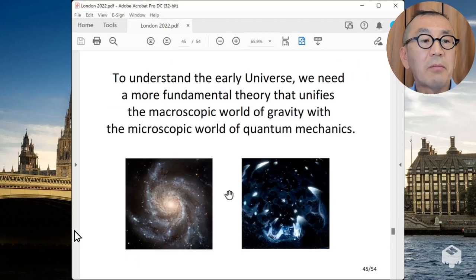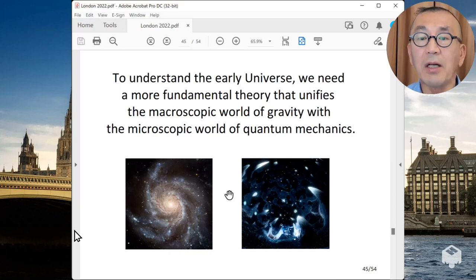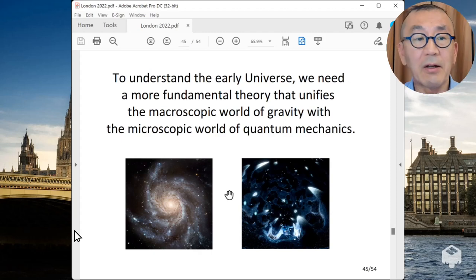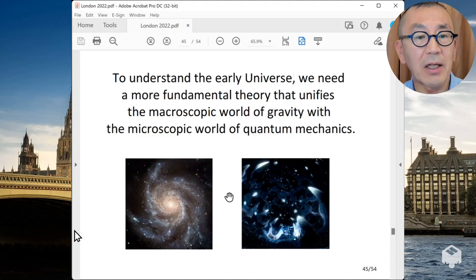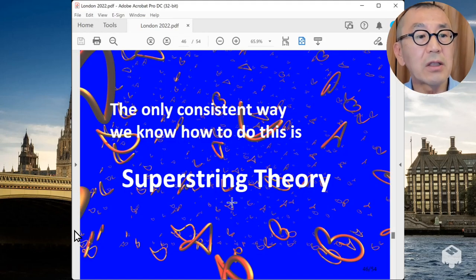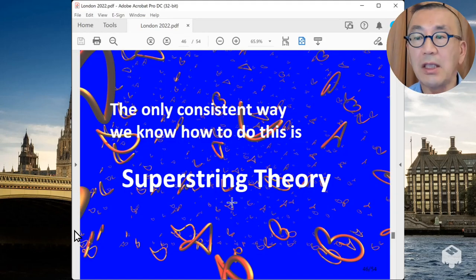There are other windows into the universe. The gravitational wave is another window for which the Nobel Prize has been awarded. But to understand the early universe, for example, the cosmic inflation is a scenario, but it has not been derived from fundamental theory. And to understand the early universe, we need a more fundamental theory that unifies the microscopic world of gravity with the microscopic world of quantum mechanics. And the only consistent way we know how to do this is super string theory.